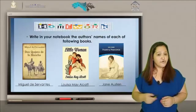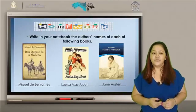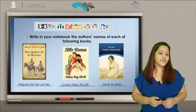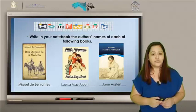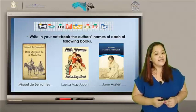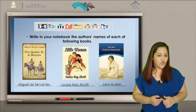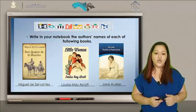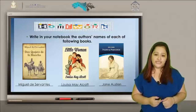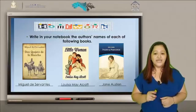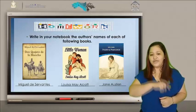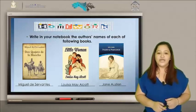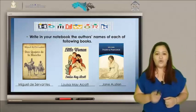Let's check your homework. Write in your notebook the author's name of each of the following books. Miguel de Cervantes — Don Quijote de la Mancha. Little Women — Louisa May Alcott. Pride and Prejudice — Jane Austen. If you have your homework like this, your homework is correct. Si tú tienes tu tarea como esta, tu tarea está correcta.